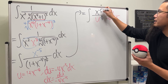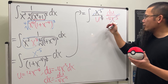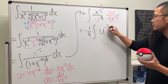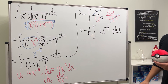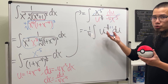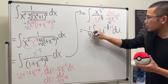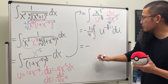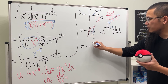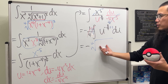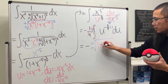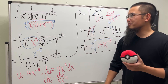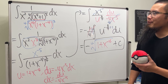The x to the negative five terms cancel nicely. We pull the one over negative four out front and integrate u to the negative three-fourths power in the u world. Adding one to the exponent gives positive one-fourth, and dividing by the new power — which is the same as multiplying by four — they cancel beautifully. So the answer is negative fourth root of one plus x to the negative four, plus C.